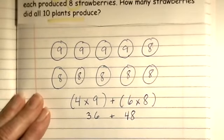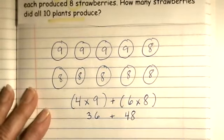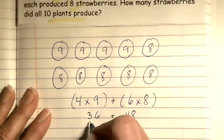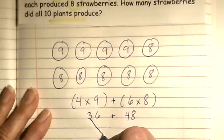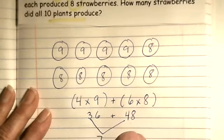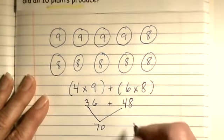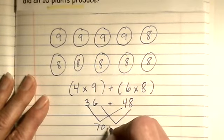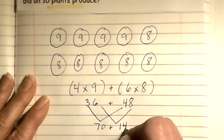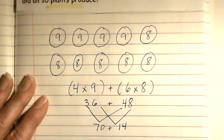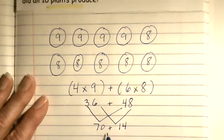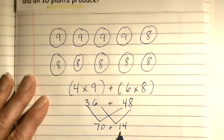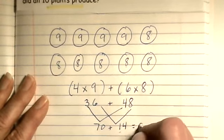Now, I just have to add them up, because they want to know how many strawberries did they have in all. So, I can add my tens, my thirty and my forty, and get seventy. And I can add my ones, six plus eight is fourteen. And then I add my seventy and fourteen, so seventy and ten is eighty, plus four.